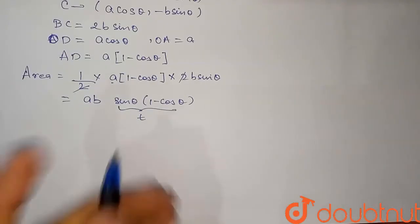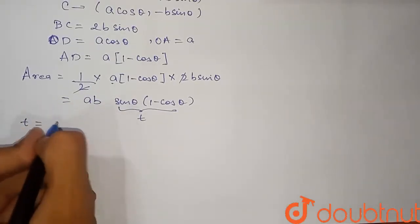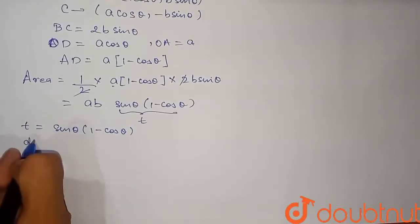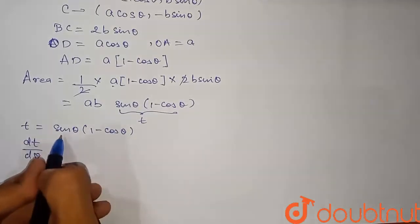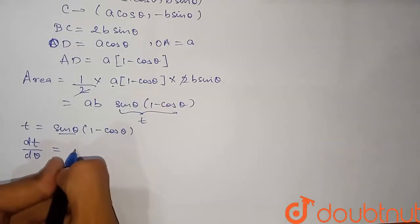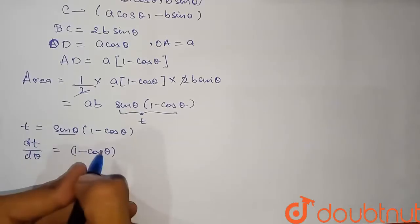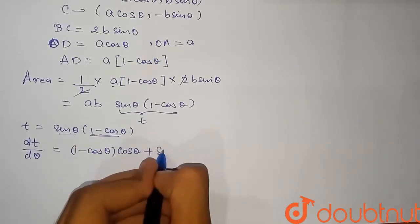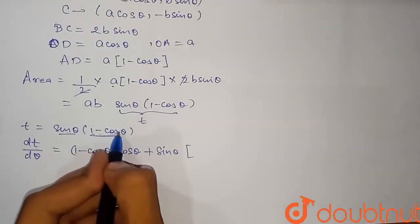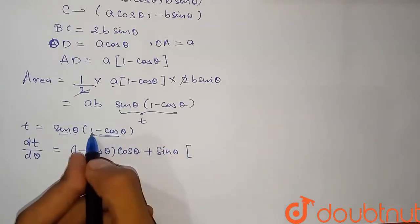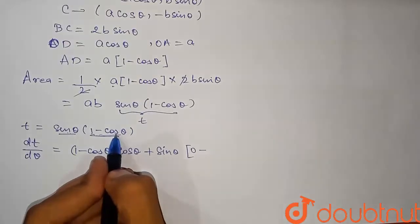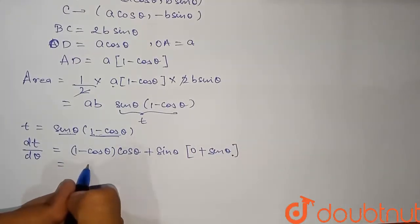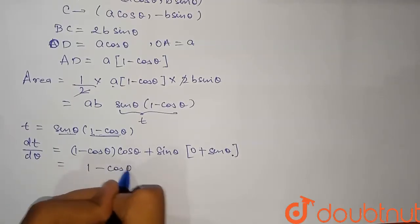We differentiate t = sinθ(1 − cosθ) with respect to θ using the product rule: dt/dθ = cosθ · (1 − cosθ) + sinθ · sinθ. Differentiating sinθ gives cosθ, and differentiating (1 − cosθ) gives sinθ. So dt/dθ = cosθ(1 − cosθ) + sin²θ.